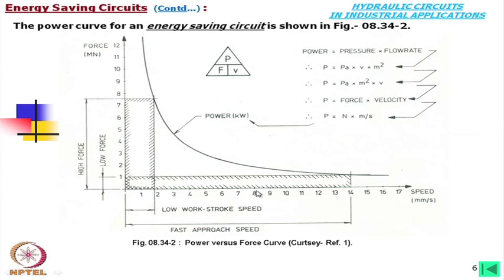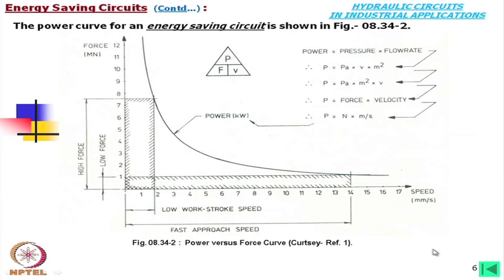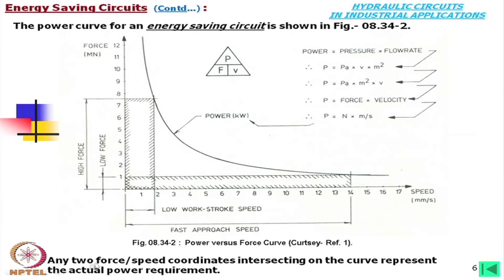In some cases this is automatically adjusted; in other cases you can adjust it manually. Say we are using the system for hammering or pressing — if we see we need less pressure, we can immediately adjust it so it is done at high force using low pressure. That adjustment can be done manually, and for that study we need similar graphs. Any two speed-force coordinates intersecting the curve represent the actual power requirements.